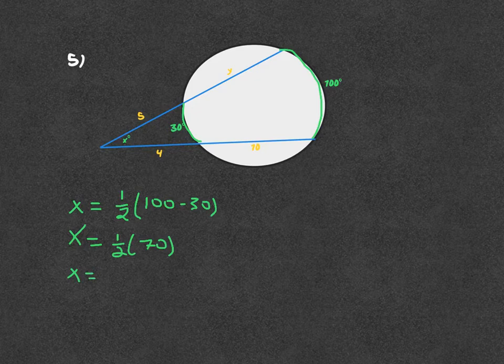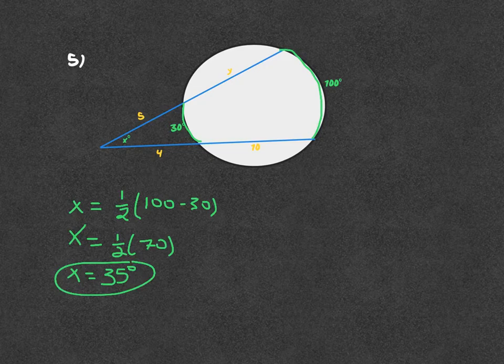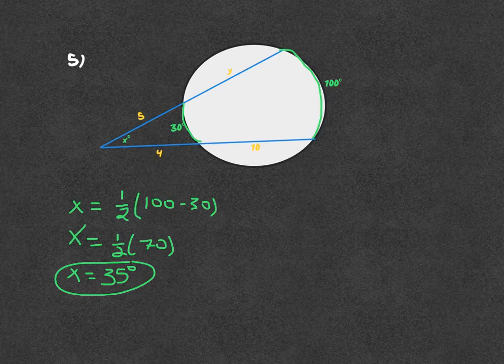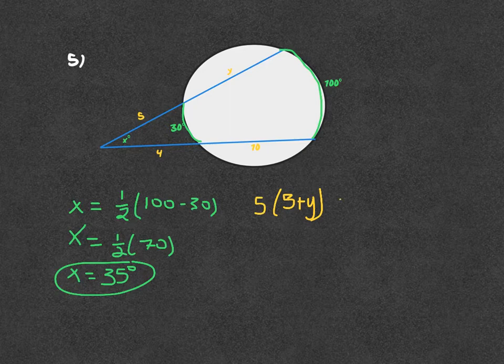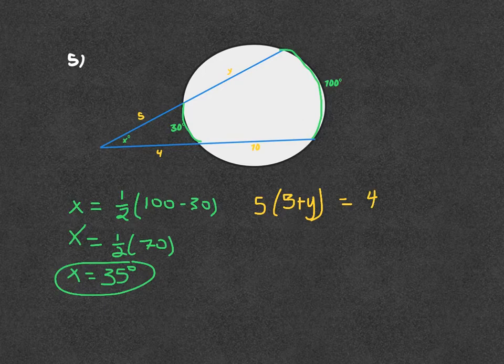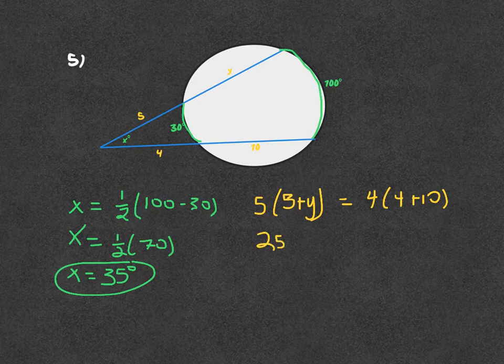Next part we need to find the Y, which is dealing with the segment length. We're going to have the sum of the secant, of the two segments of the secant, 5 plus Y, multiplied times the outer portion of the secant line, equal to the outer portion of the secant line, 5, times the sum, which is 4 plus 10. So that would be 25 plus 5Y equals 4 times 14.